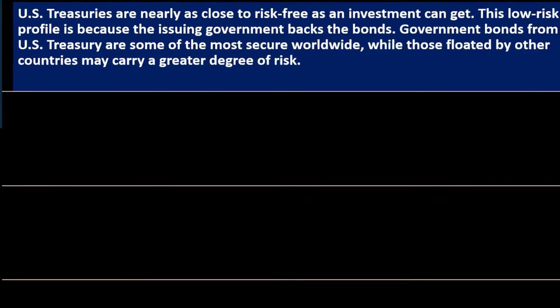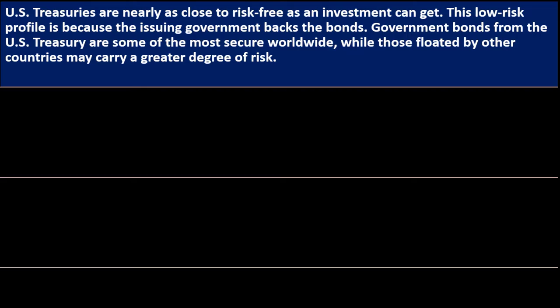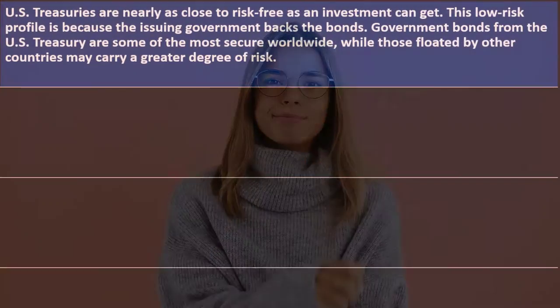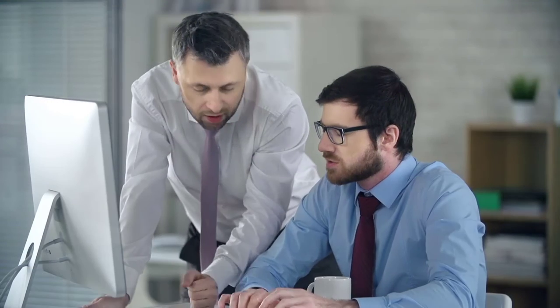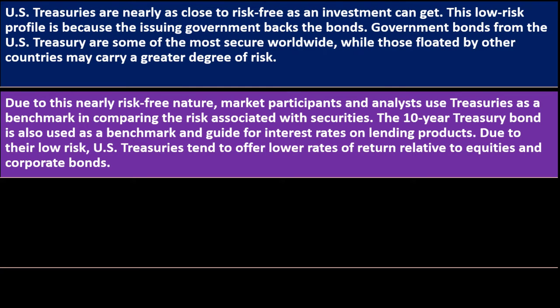US Treasuries are nearly as close to risk-free as investments can get. When thinking about the lowest-risk investment, you typically think US bonds, because they're backed by the US government, which is generally considered one of the most stable governments in the world. Government bonds from the US Treasury are some of the most secure worldwide, while those issued by other countries may carry a greater degree of risk — similar to companies that might default on bonds. Due to this nearly risk-free nature, market participants and analysts use Treasuries as a benchmark for comparing the risk associated with other securities.